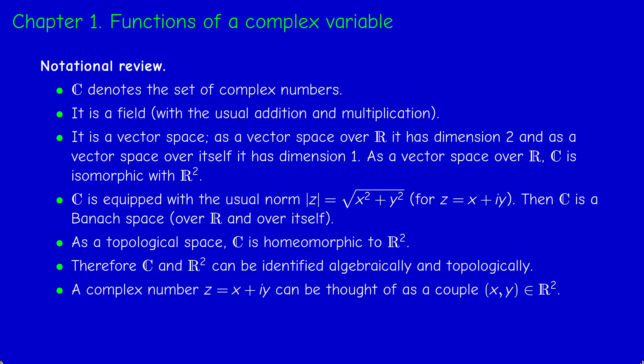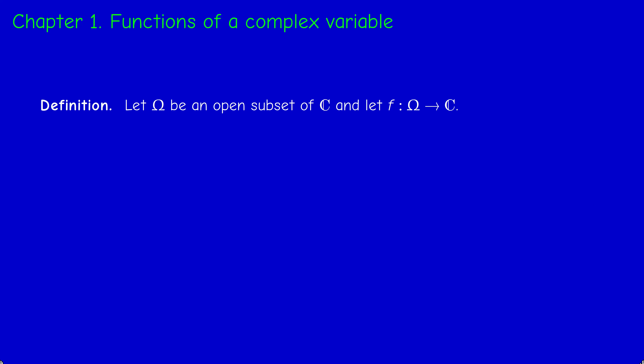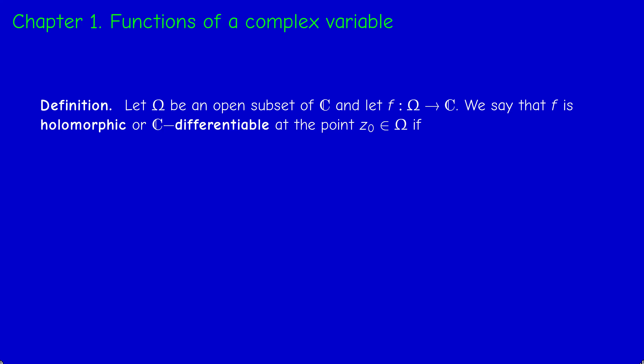Now we review the notion of holomorphic function. We shall consider functions defined on an open subset Ω of C, because the function need not be defined on the whole plane — it's defined on a subset we usually take to be open. If Ω is an open subset of C and F is a function from Ω to C — a function of a complex variable taking complex values — then if Z₀ is a point in Ω, we say that F is holomorphic at Z₀.